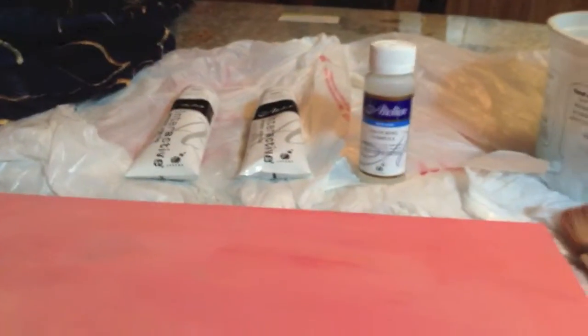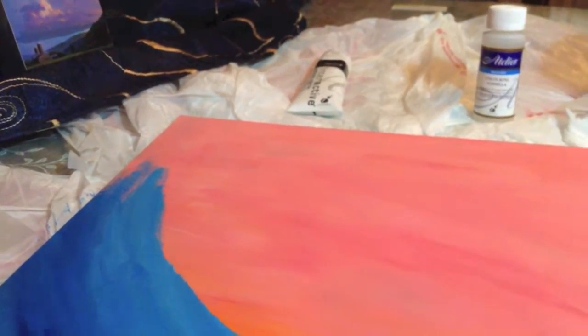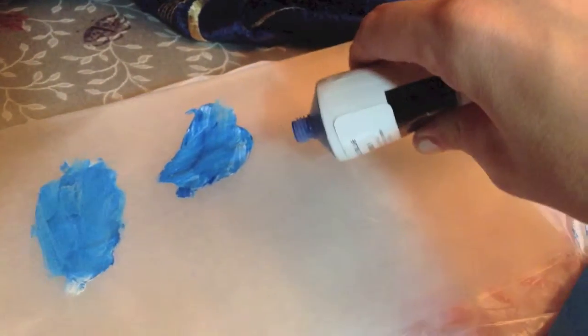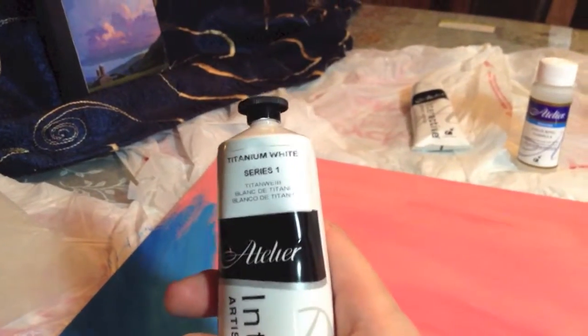Let me show you what the paints look like out of the tube. I was actually pretty impressed with what they look like. So this one's the Theo Blue. This one is the Titanium White.